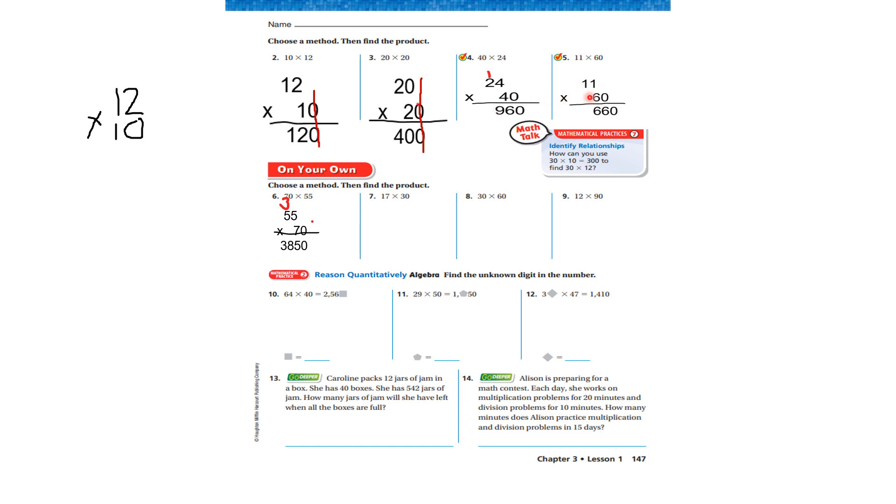Let's look at this one. Eleven times sixty. I moved that zero over and put it in there already. I put it in the answer column already. Six times one is six. Six times one is six. My answer is six hundred and sixty. Eleven times sixty.